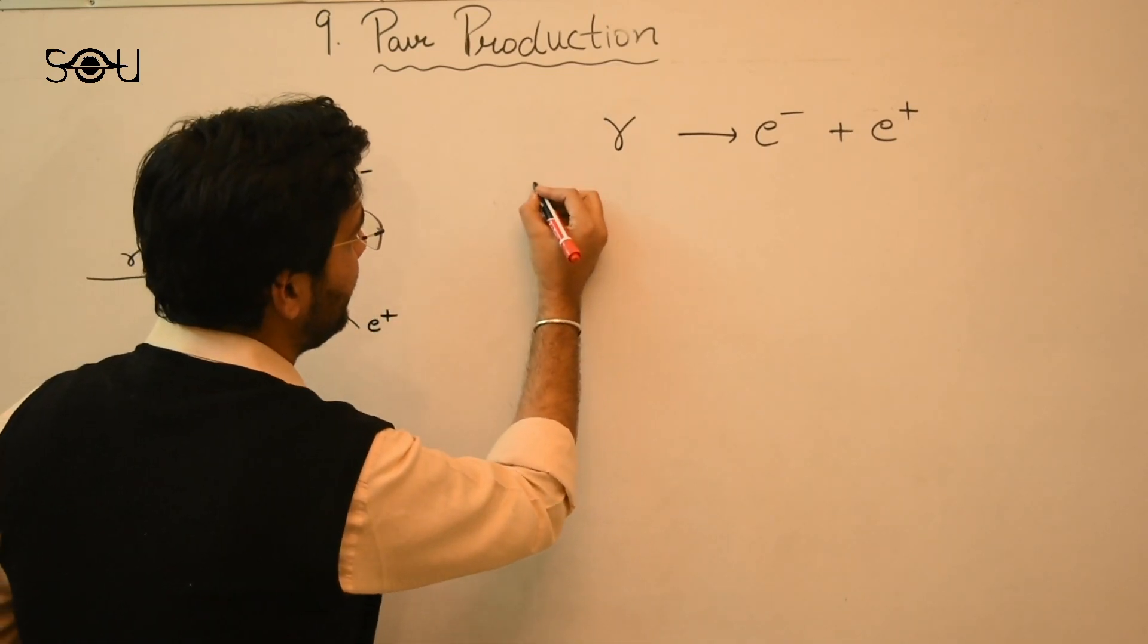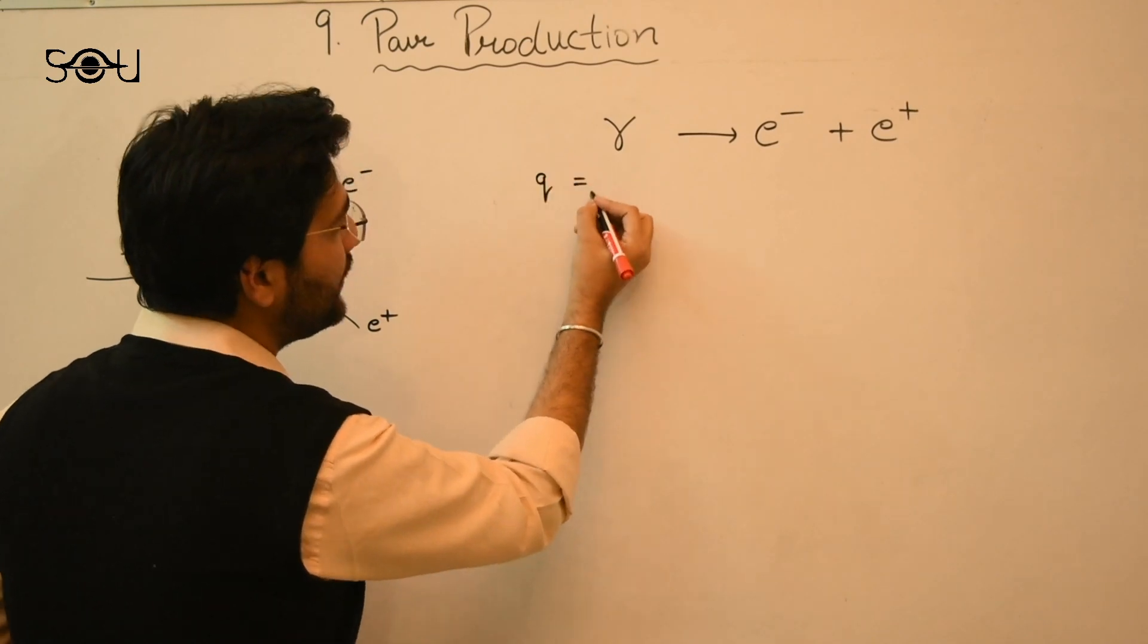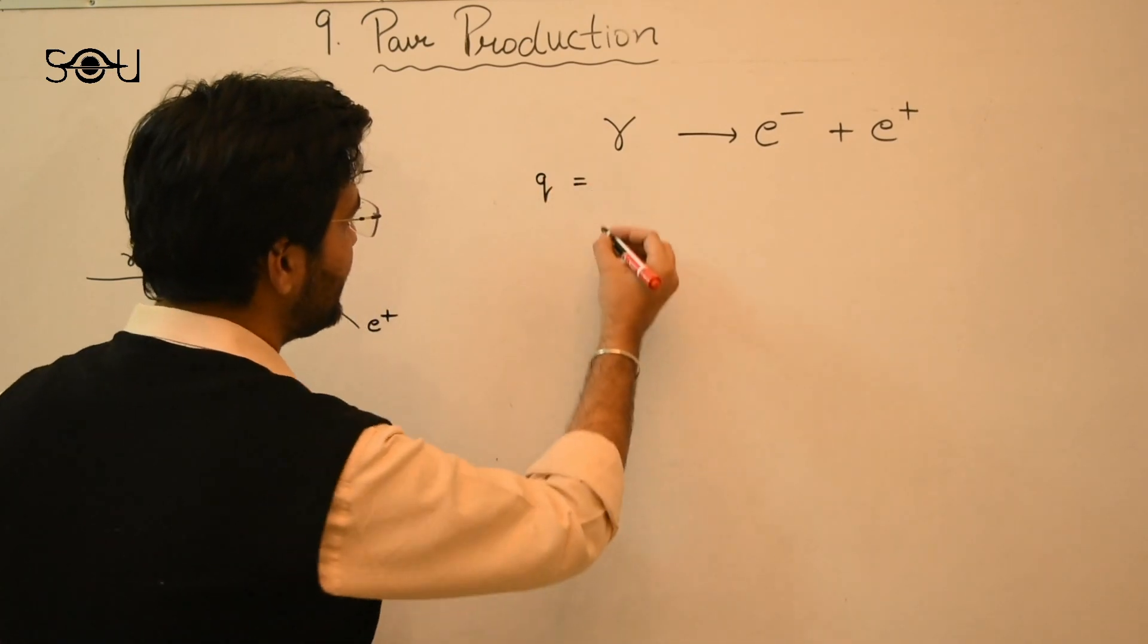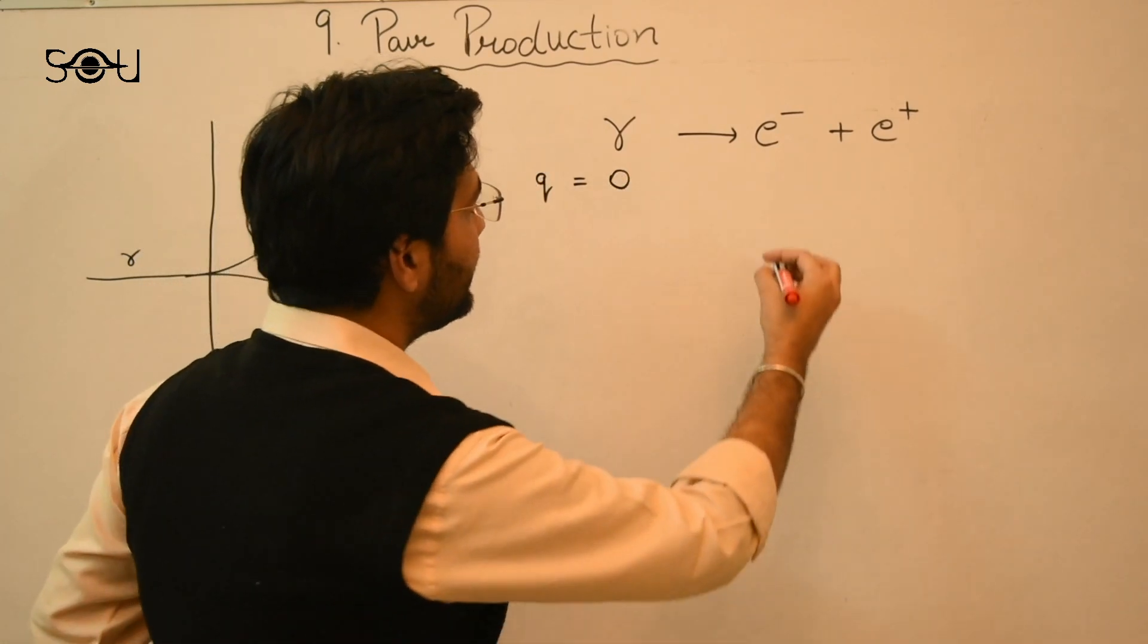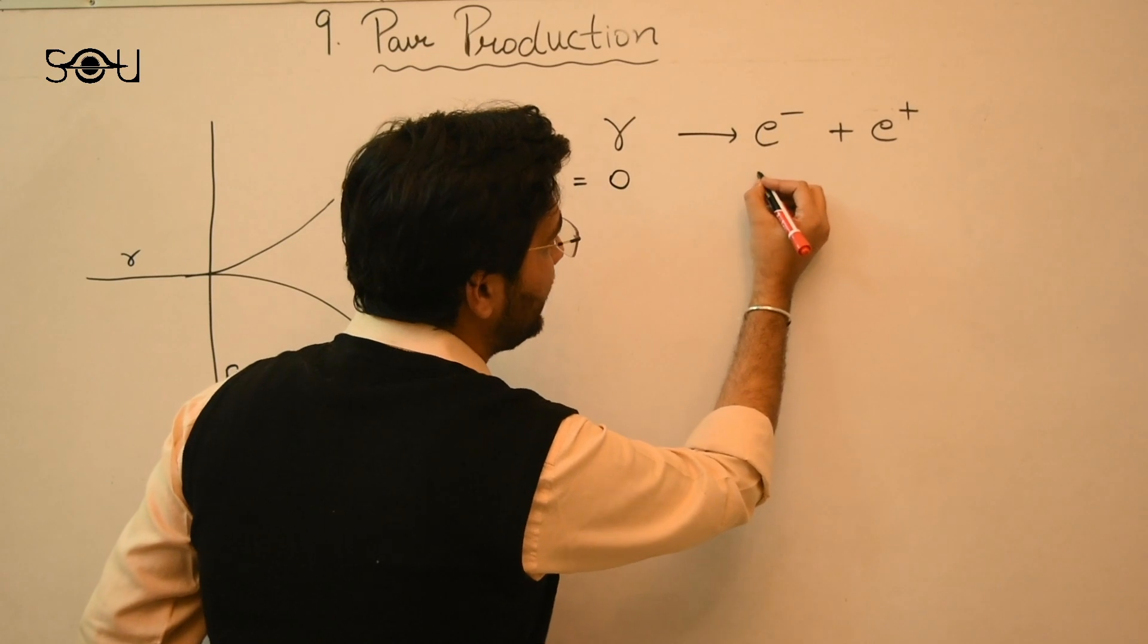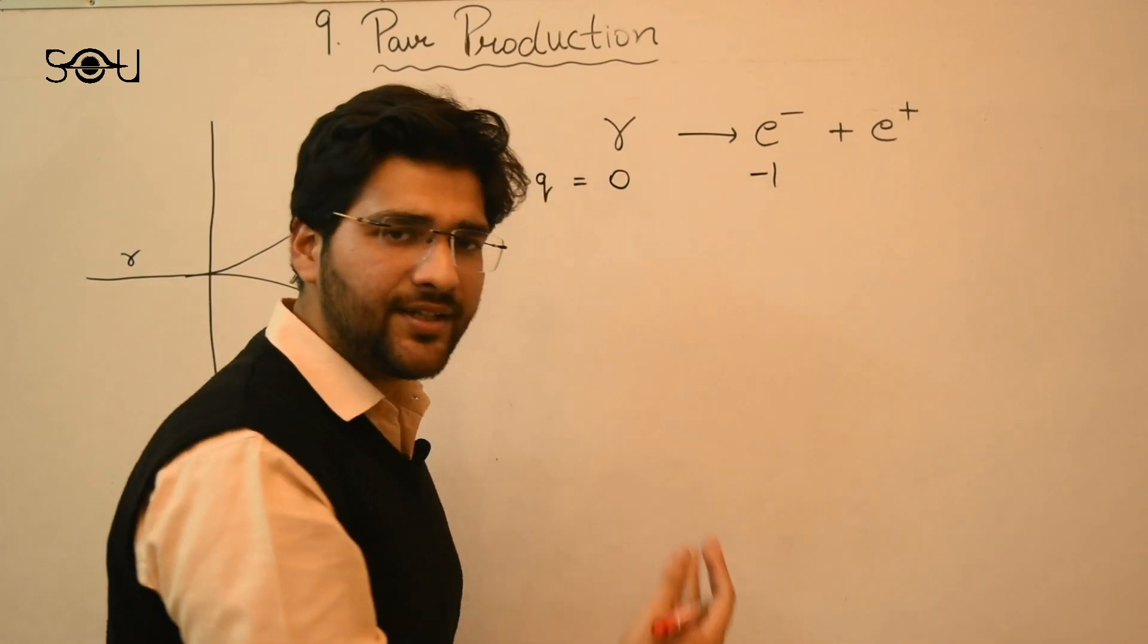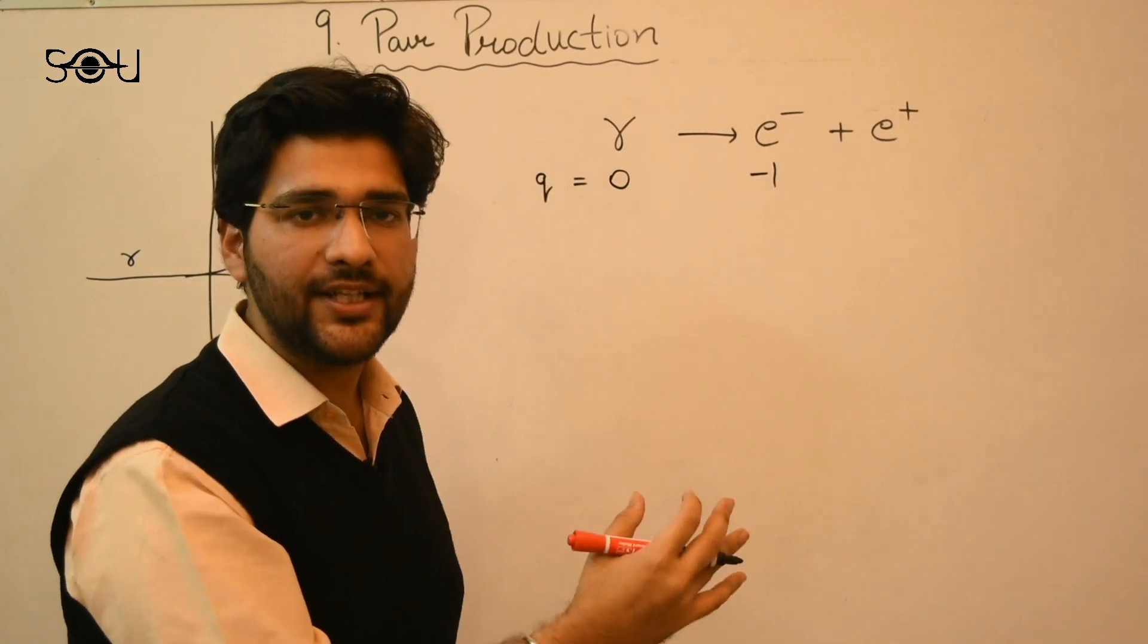So left hand side, I have electric charge. Photon is a neutral particle, so its electric charge is zero. Now on the right hand side, the electric charge of an electron is minus one in terms of the elementary electric charge.